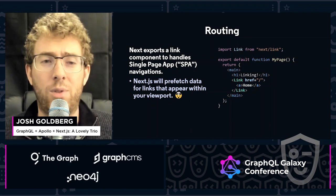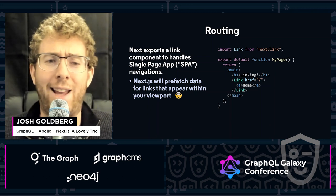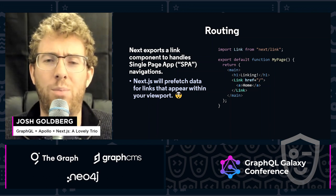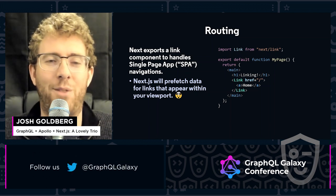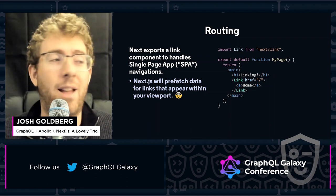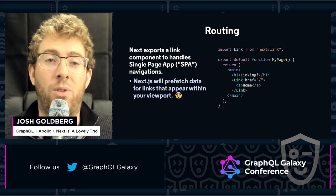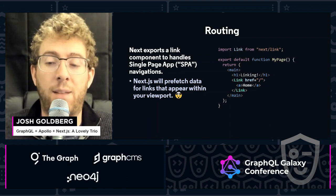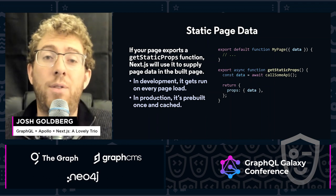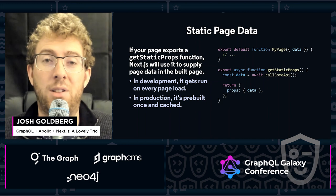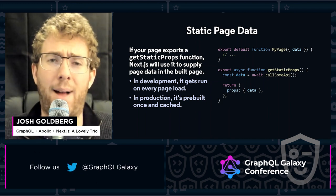I have seen rumors online and some substantiation of this idea that Next will actually prefetch data for links that appear within your viewport if it's a link to a Next page using this link component, which I think is just the coolest darn feature in the world. The way Next is able to do that is not just by controlling your page generation and then the linking, but also the data that's used to power those pages. If you have a static page — meaning a page that gets built into a static HTML file that can be immediately served — that's very good for performance and highly recommended when possible.